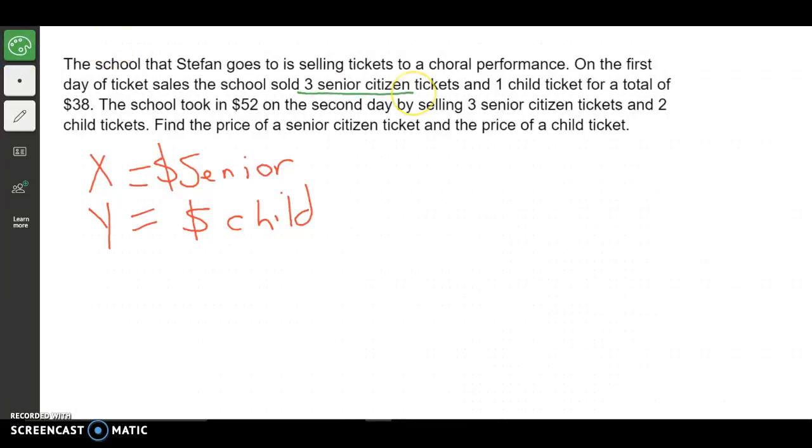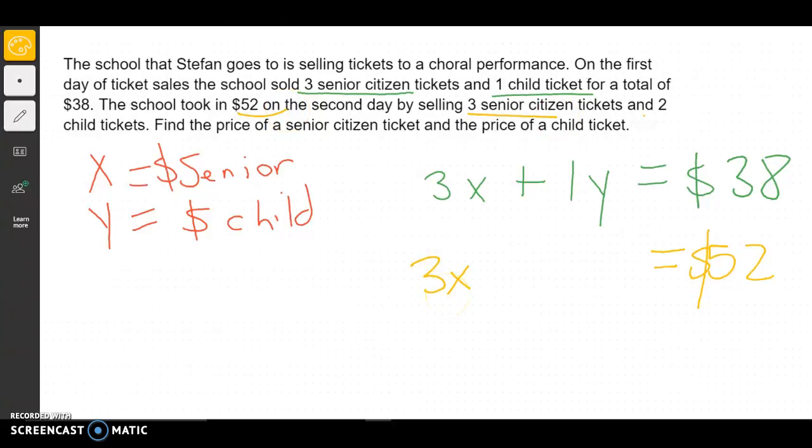Let's see if we can set some equations up with it. Well, they said they sold 3 senior citizen tickets. So if I take 3 and times it by the cost of my senior citizen tickets, that would be how much money they made off the senior citizen tickets. And they sold 1 child ticket. So if I take 1 and times it by the child's ticket value, and we add those two costs together, that should equal the total cost that they made that day, which would be $38. We can do that for the second equation. This time they told me my total cost first, which is $52. And if we take our senior citizen tickets times that by 3, and our child tickets which is 2, and add them together, we should get that total value.